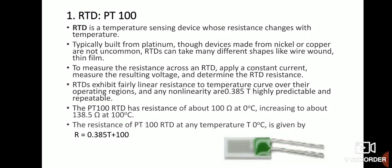Based on Ohm's law, you can easily determine the new resistance value of the RTD. The RTD exhibits a fairly linear resistance-to-temperature curve over its operating range. A common example is the PT100, which is widely used in many applications. The PT100 has a resistance of 100 ohms at 0°C, and at 100°C its resistance is 138.5 ohms.